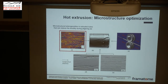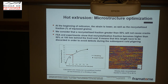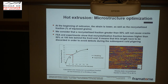Coming back to our industrial issue: how can we use this model to improve the microstructure? At the beginning of extrusion the flow is not stable, so the strain is lower and we have a lower recrystallization fraction — confirmed both by modeling (lines) and experiments (dots). This already explains that if we roll a tube with such microstructural heterogeneities, we will have cracks. By experience, we know we have to cut the beginning of the tubes to reduce cracking during cold rolling. We can also use this model to modify extrusion parameters like temperature and extrusion rate to improve the recrystallization rate.